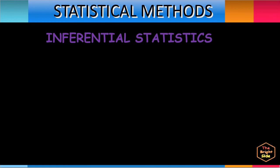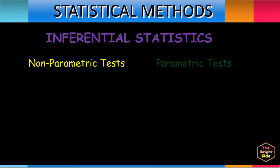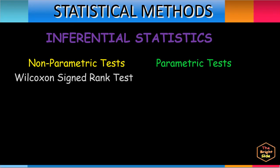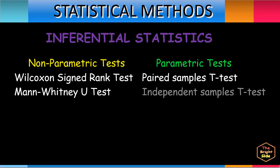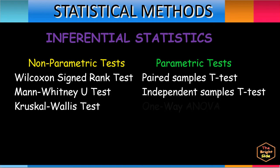It is important to note that all non-parametric tests on rank data have their equivalent parametric tests for quantitative data. The Wilcoxon signed-rank test matches the paired samples t-test, and the Mann-Whitney U test corresponds to the independent samples t-test, while the Kruskal-Wallis test is sometimes called the one-way ANOVA for ranks. The decision of which statistical test to use depends not just on the number of groups, but also on the type of data collected.